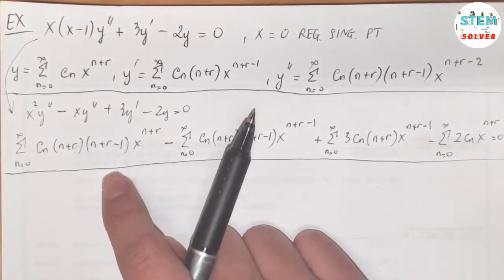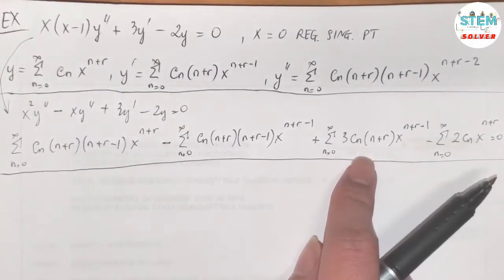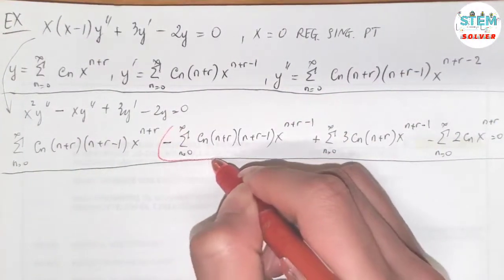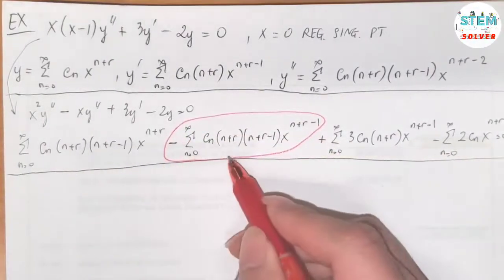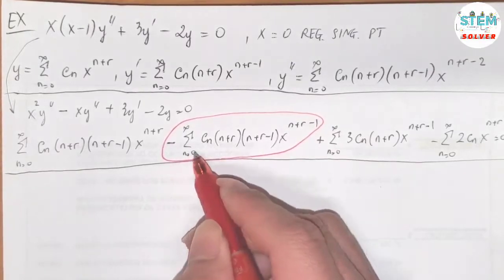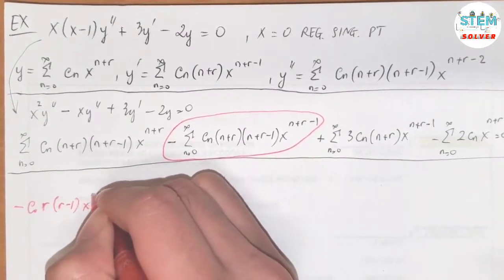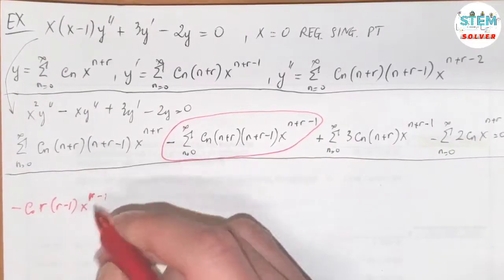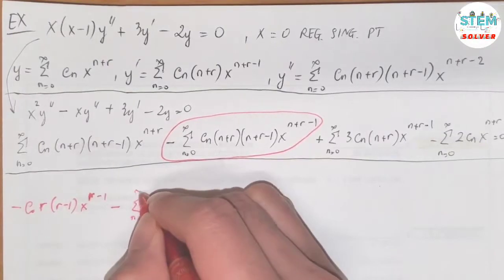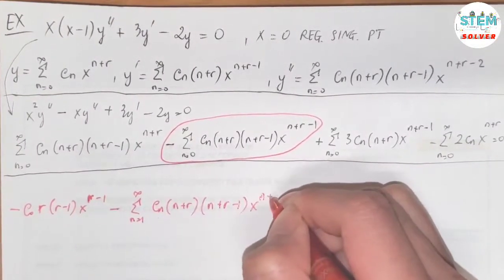Let's run out terms for the second and third series first. For the second series, when n equals 0 we have x to the r minus 1, then minus the series from 1 to infinity of c_n(n plus r)(n plus r minus 1) times x to the n plus r minus 1.